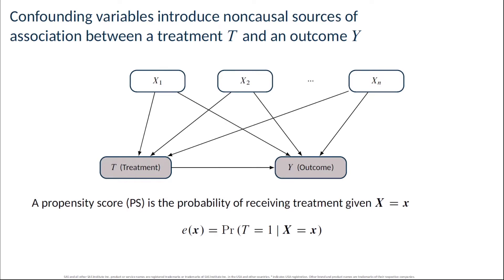For binary treatment variables, the propensity score is the basis of many methods of adjusting for confounding. The propensity score is defined to be the probability of receiving treatment conditioned on an adjustment set x. In this video, we'll consider the use of propensity score matching as the adjustment method.